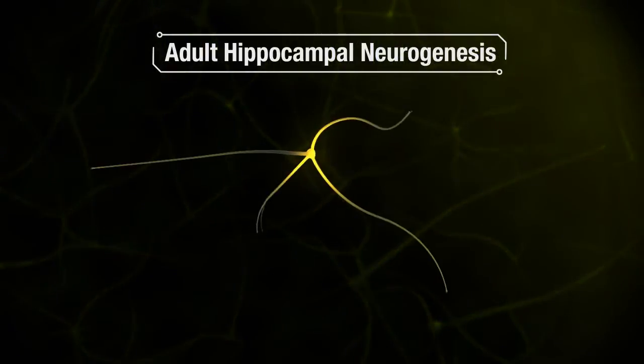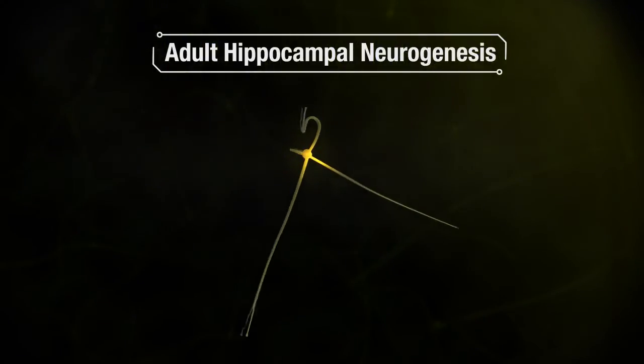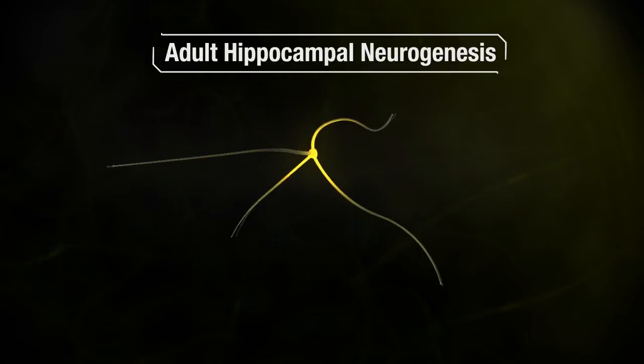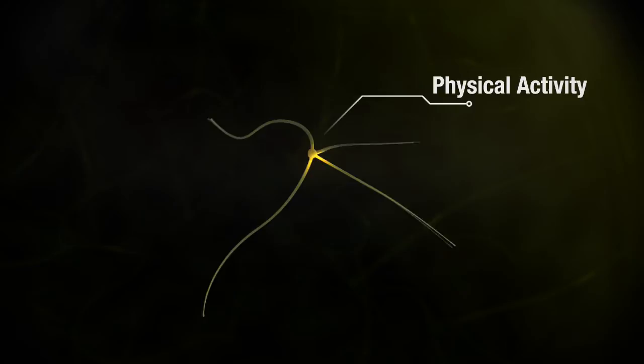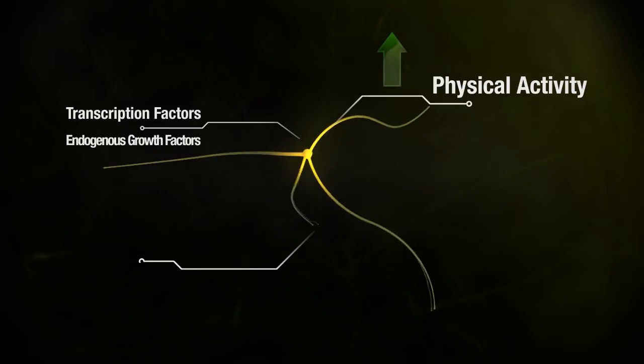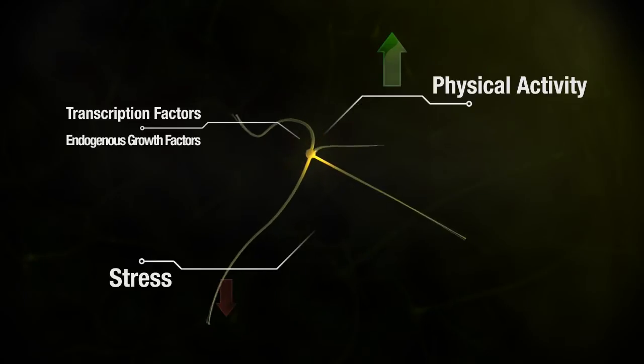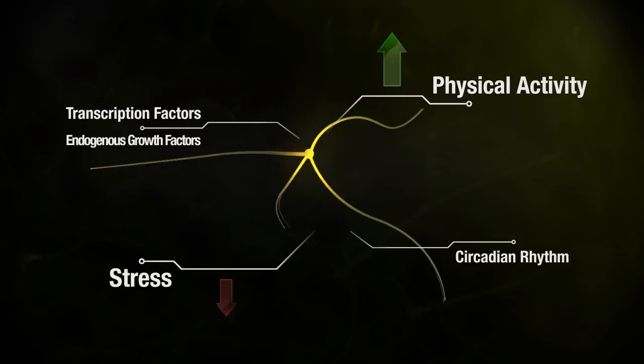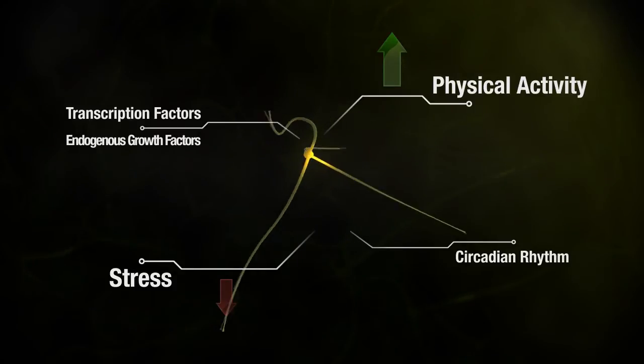Adult Hippocampal Neurogenesis. Many factors are found to affect neurogenesis in the adult brain. Frequent physical activity is found to increase cell proliferation, while stress reduces new neuron formation via increasing some endogenous factors such as corticosterones and glutamates.